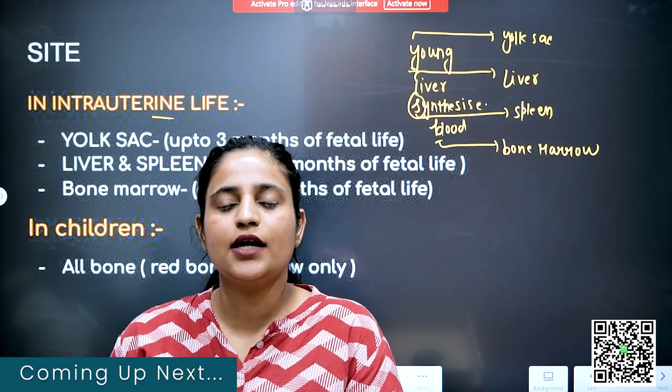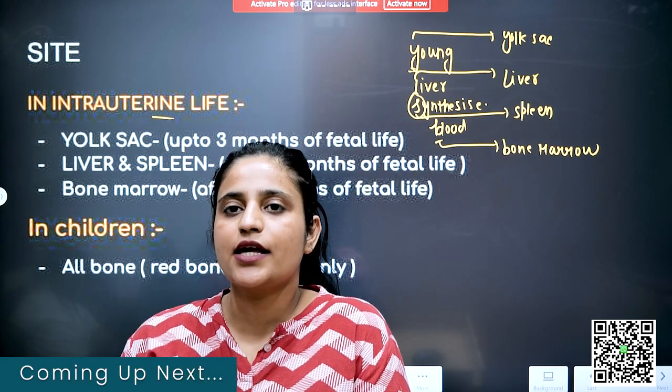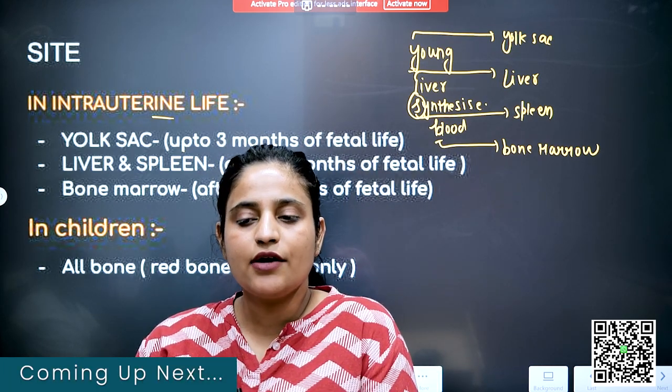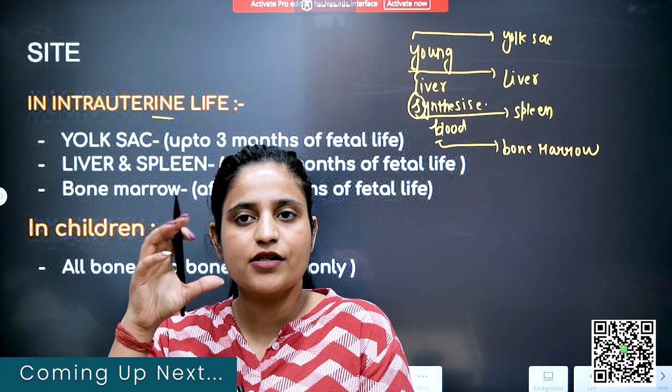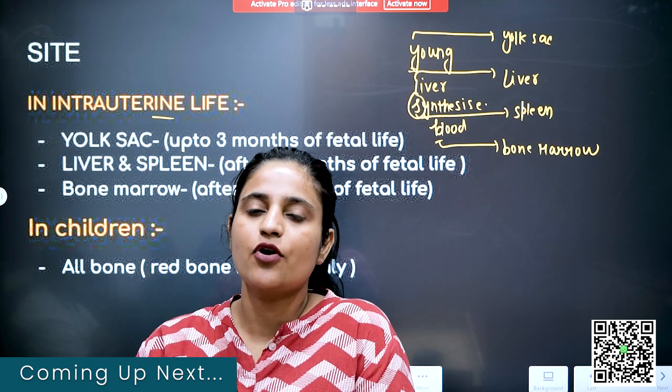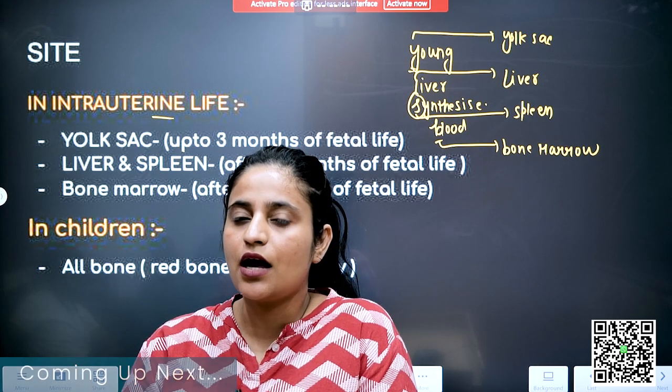Remember only one mnemonic: 'Young Liver Synthesized Blood.' So in intrauterine life, during the first to three months of embryonic development, this mnemonic helps you recall where blood cell formation occurs.